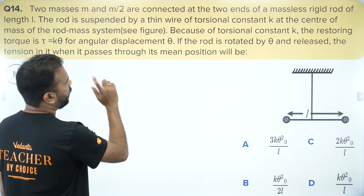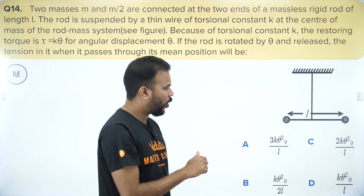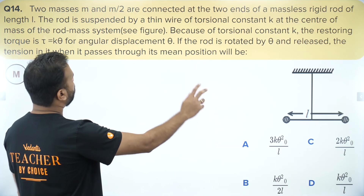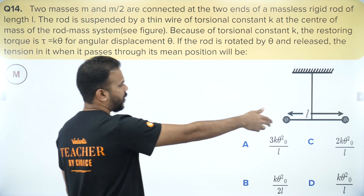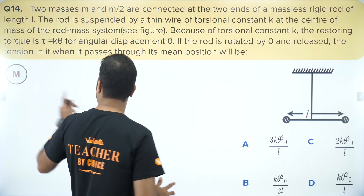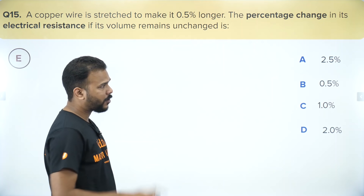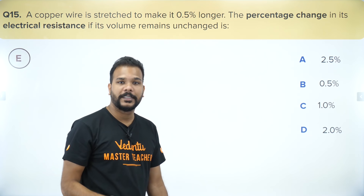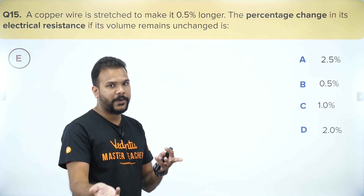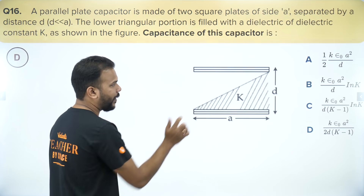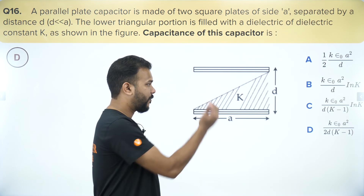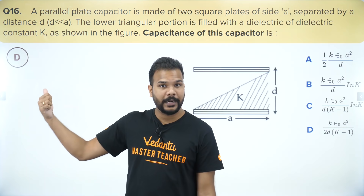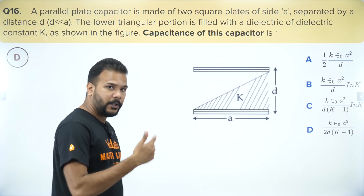A torsional pendulum — find tension in the string during rotation using the SHM method. Not very easy, not very difficult. Marking as mediocre. A copper wire whose length is increased — find the percentage change in electrical resistance using R = ρL/A, with volume kept constant. Easily doable, marking as easy. A capacitance question with a dielectric placed non-uniformly — will require integration, which makes it lengthy. Marking as difficult.